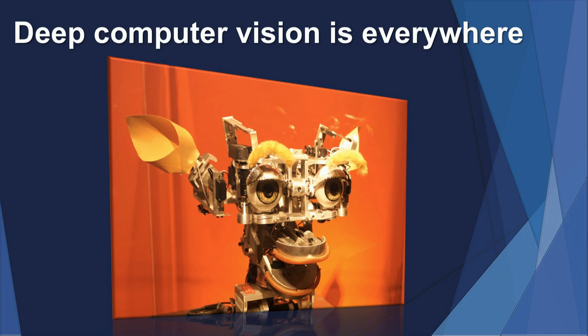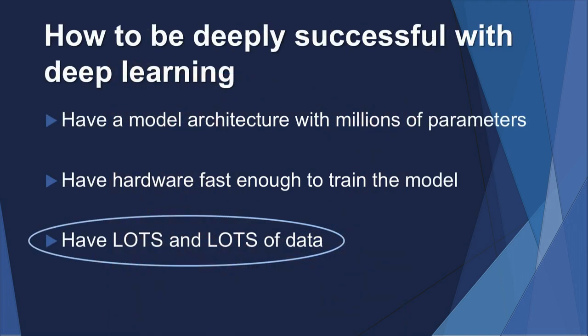Outside of State Farm, there's even more interest in computer vision — from self-driving cars to that awesome app on my phone that can tell me if I'm looking at a hot dog or not. Computer vision is pervasive. Here's the recipe for doing computer vision really well, or deep learning in general: have a model architecture with millions of parameters, a GPU to crunch that model, and lots and lots of data.